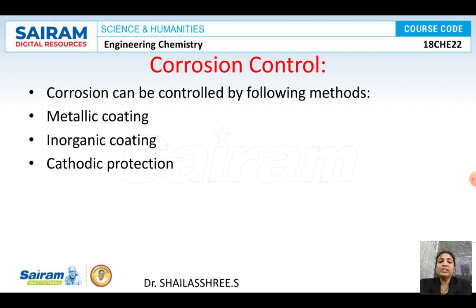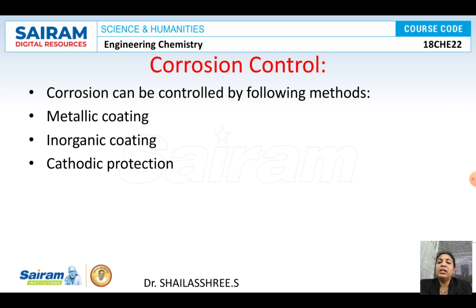We are discussing metallic coatings. For metallic coatings, we are going to discuss anodic metal coating, that is the galvanization process. Another type is inorganic coatings — we are going to discuss anodizing of aluminum. Under cathodic protection, we are going to discuss the sacrificial anode method and impressed voltage methods.